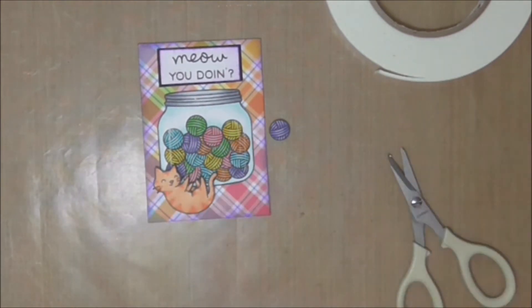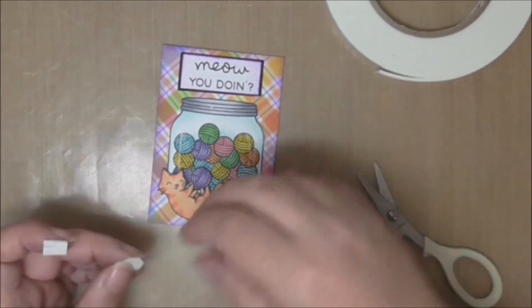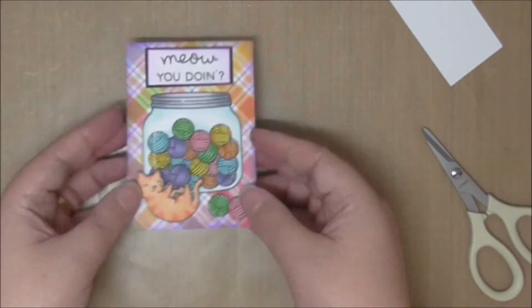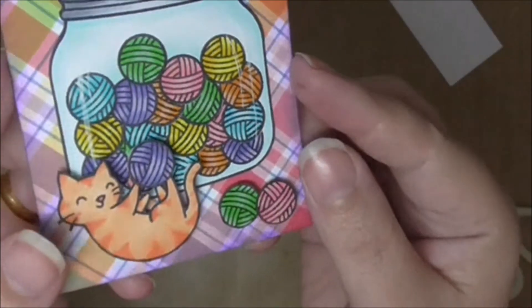And the kitty is up on foam tape. So is the purple ball of yarn. I've got her holding that. I did do two more balls of yarn, a pink and a green, so that I could add them to the bottom of the card. And look, that's it.